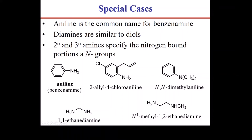Aniline is the common name for aminobenzene, and we'll spend time discussing it. For a derivative of aniline, the nitrogen defines the number one position. The number two position has an allyl group, and the number four position has a chloro group. You can't use ortho/para designations once you have more than two substituents. When substituents come off the nitrogen, we specify that with an N — so the audience knows they're on the nitrogen, not on the benzene ring itself.